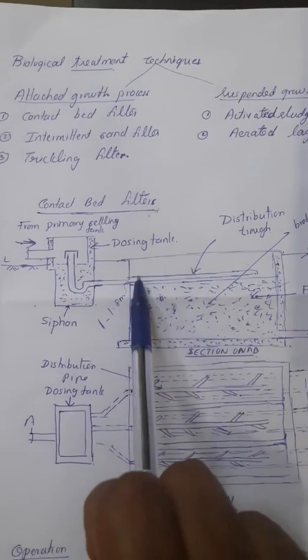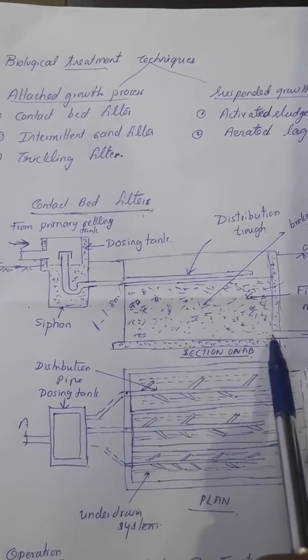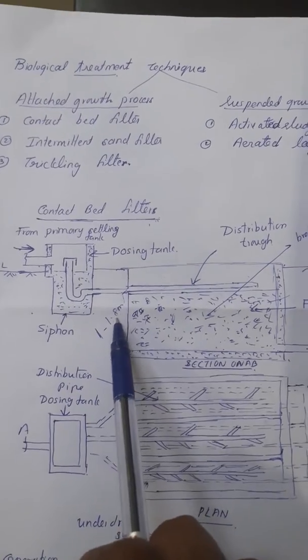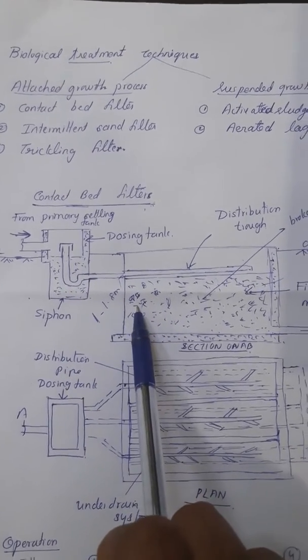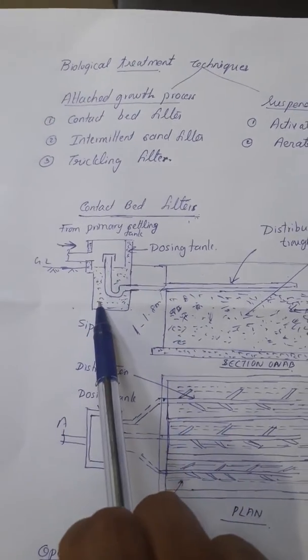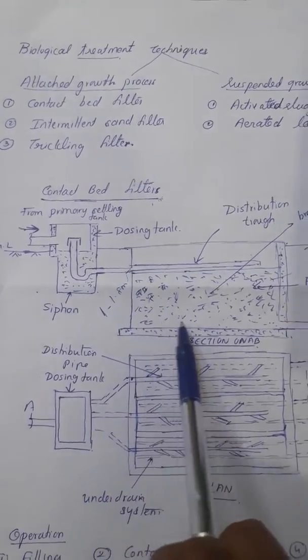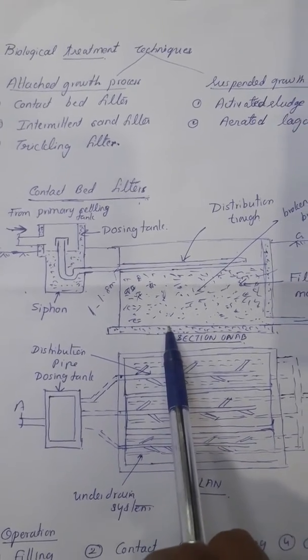The contact bed is a watertight tank of masonry walls and is rectangular in shape. The depth of this filter media varies from 1 to 1.8 meters, and normally we can adopt a depth of 1.2 meters. This tank is generally dug below ground level and lined with watertight cement plaster or concrete surface instead of masonry.